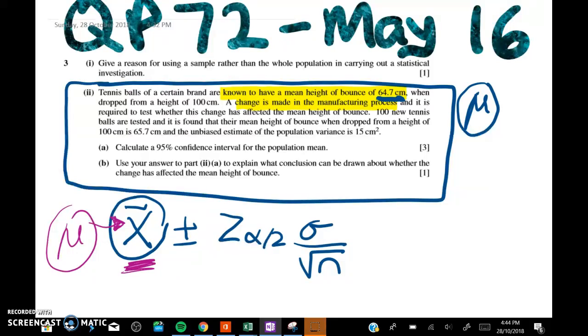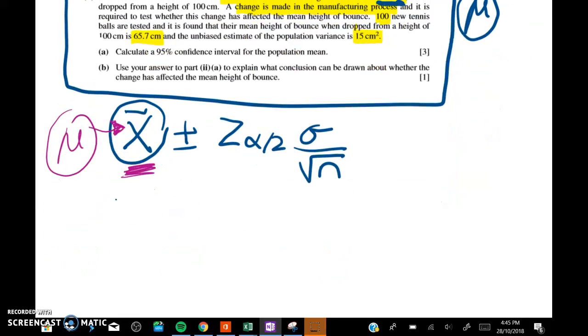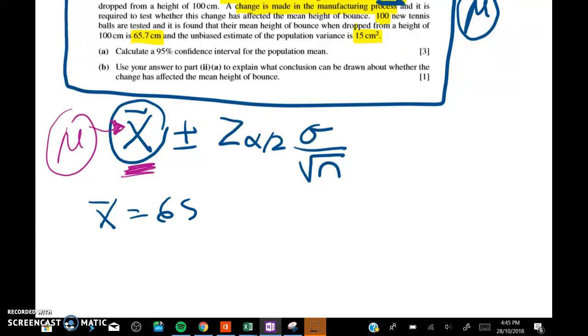So n is 100, and the mean height is 65.7, and the unbiased estimate of the population variance is 15 centimeters squared. So we've got x̄ is 65.7. z will be my two-tailed value for 95 percent.